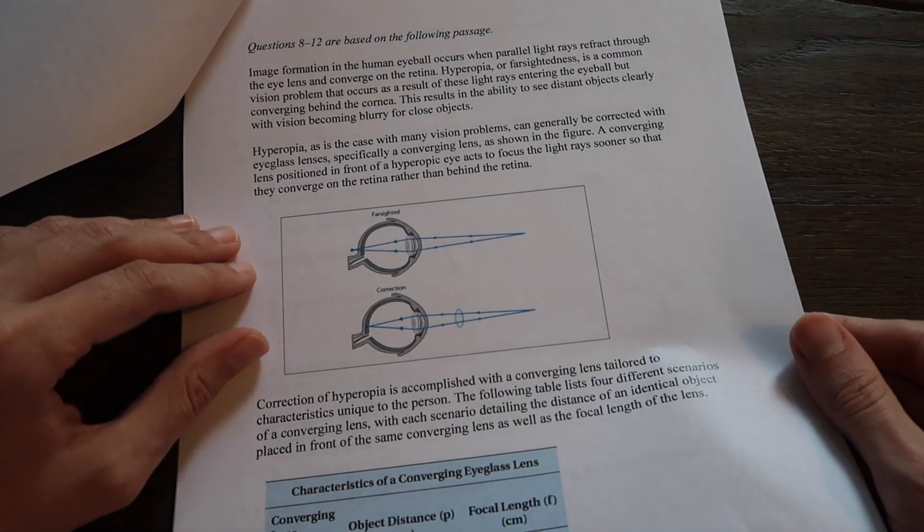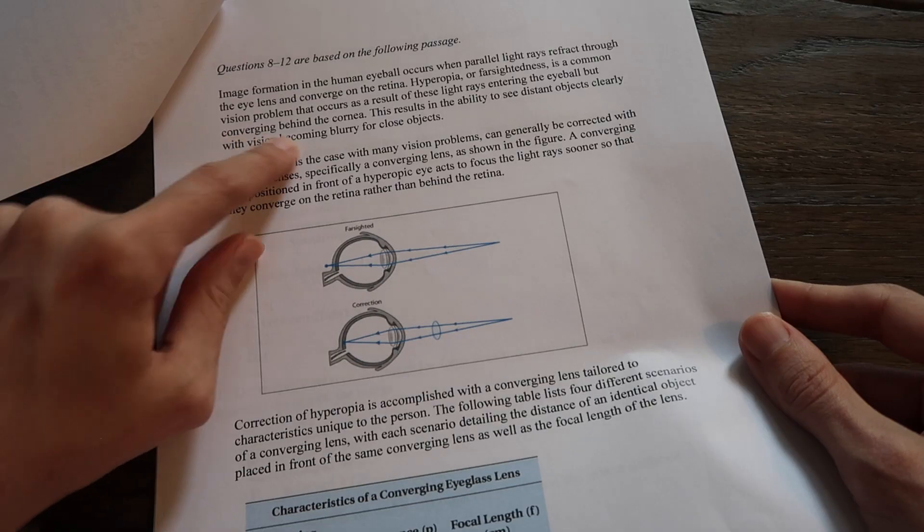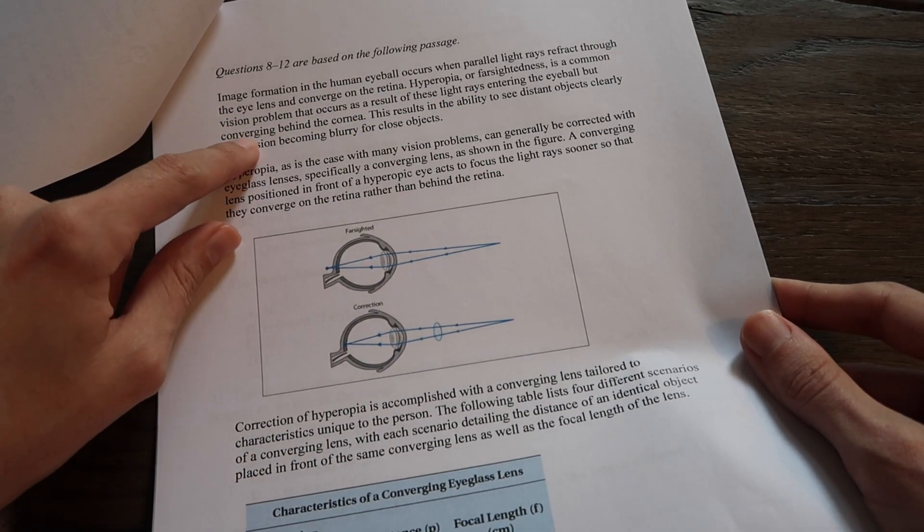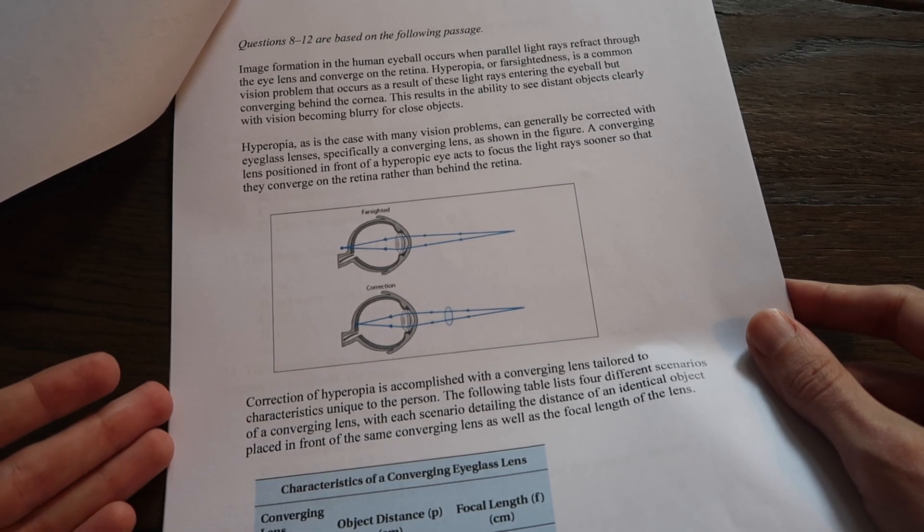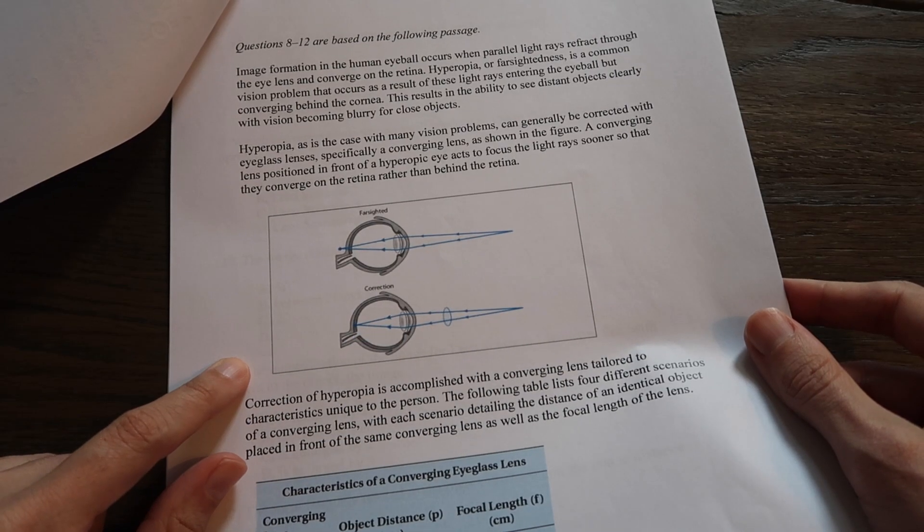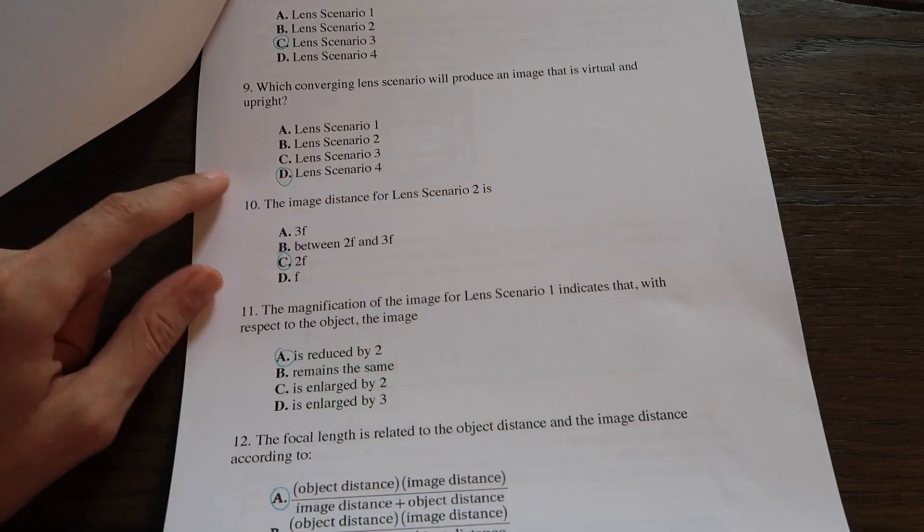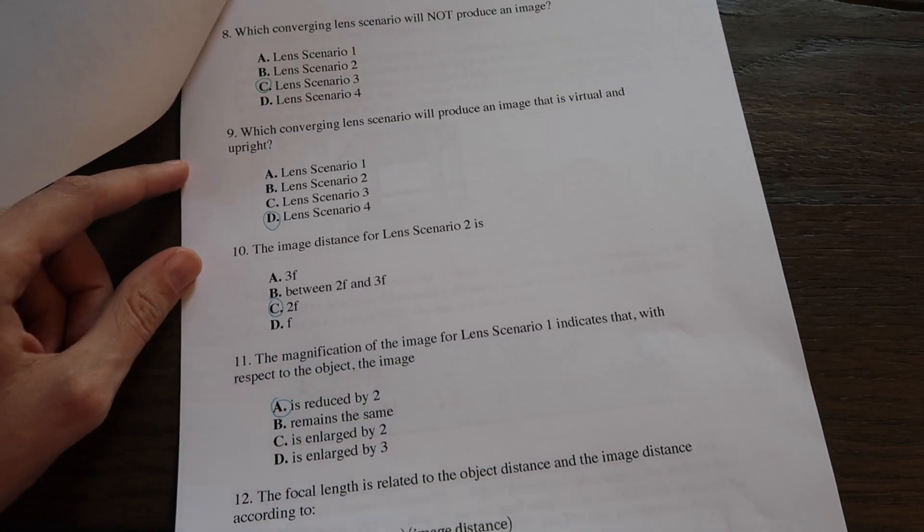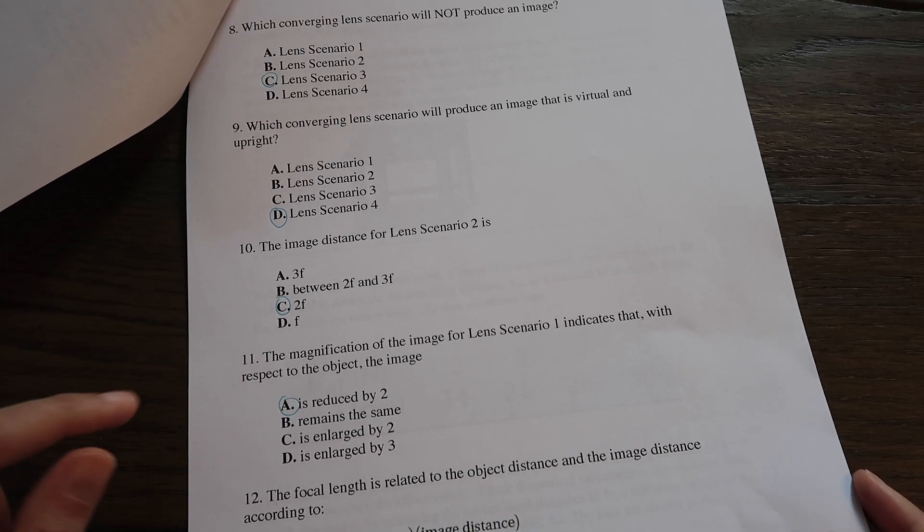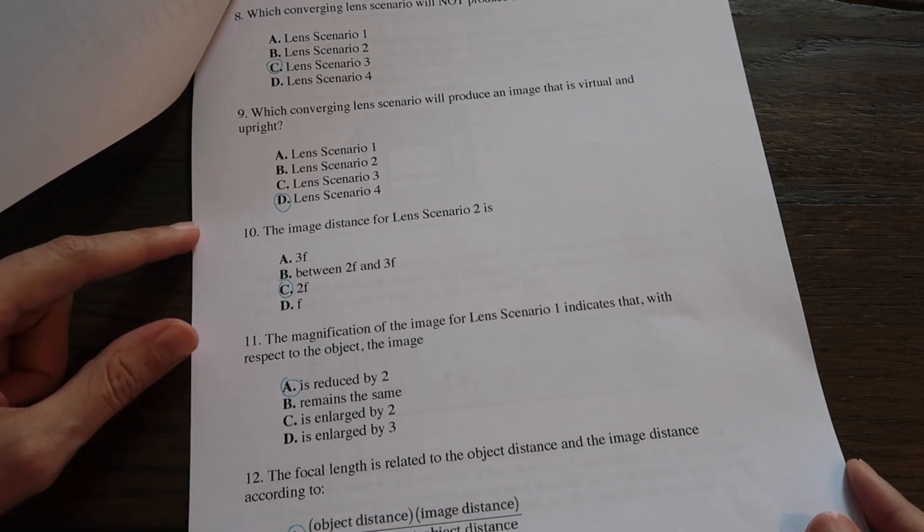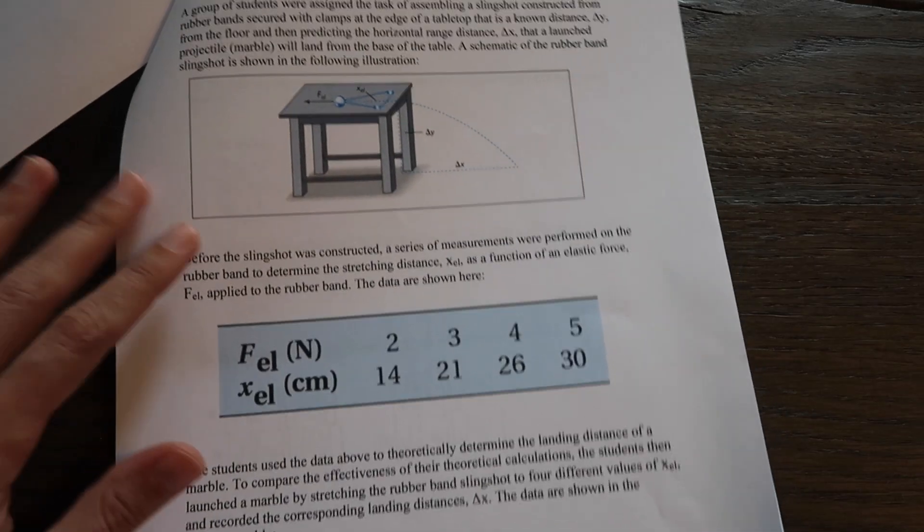Our next question is one of these ones with quite a long passage. So we can see there's a bit to read here and they're talking about something in the eye of farsightedness. A vision problem that occurs as a result of light rays entering the eyeball but converging behind the cornea. So to understand a lot of this passage we're talking about lenses and light rays and how they would refract at certain places and how they would come to a focus. So if we were to read through all this information looking at the table we can answer these next four or so problems. As well as reading the passage to answer these problems you'll need to know things like the lens equation which relates object distance to image distance to focal length and like a magnification equation that relates the image distance to the object distance. Those concepts will get you pretty much through these problems here and then we're on to another passage based problem.